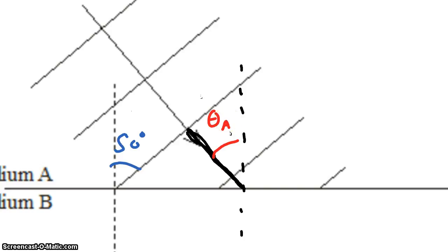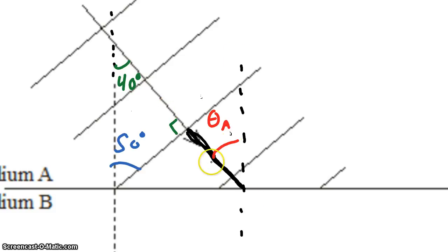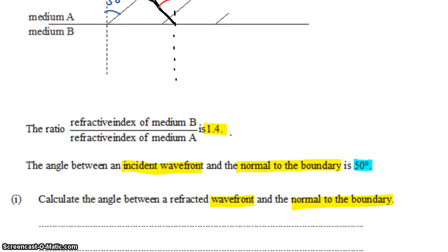There are lots of ways to find theta A using triangles. I'll show you one approach using a right-angle triangle. The angles in a triangle must sum to 180 degrees. If this angle is 90 and that one is 50, that's 140 degrees, so the third angle must be 40 degrees. I chose this angle because it forms a Z-rule with the angle I'm looking for, and by the Z-rule, that angle is also 40 degrees. So the angle of incidence is 40 degrees.